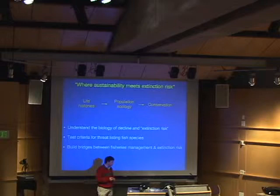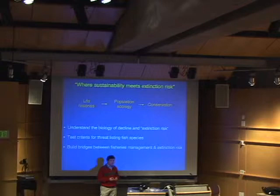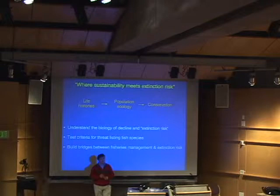I want to see what we can do about testing some criteria that are used for threat listing of species. When we say the fish, for example, is threatened with extinction, what are the bases for making those judgments? And then ultimately, my goal is to help to build some bridges between fisheries management and extinction risk, or more traditional conservation concerns.